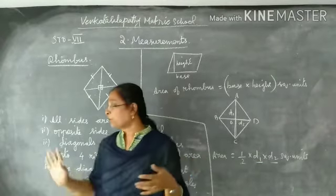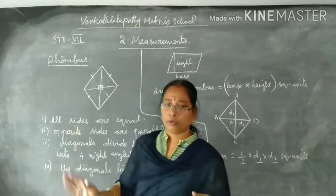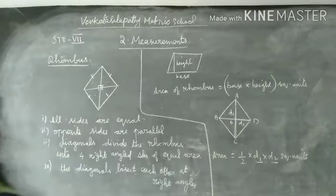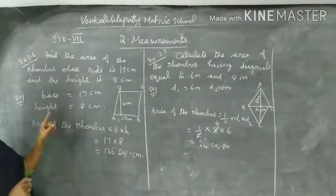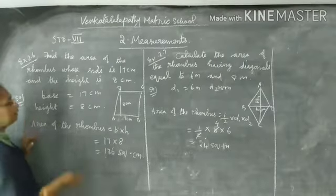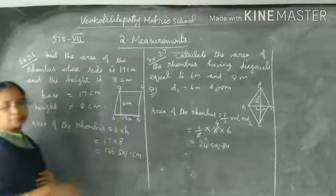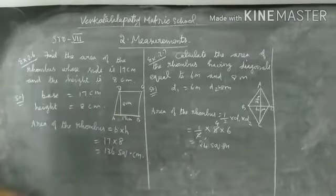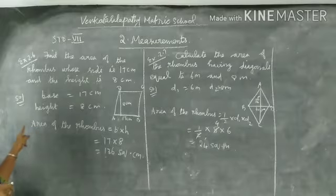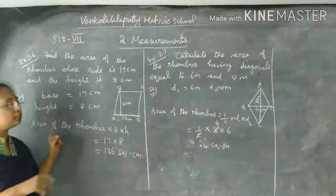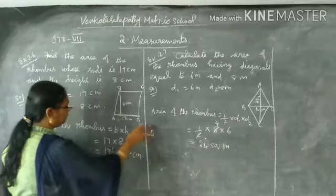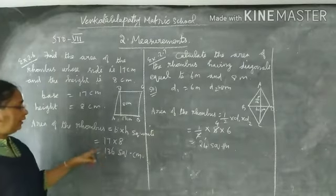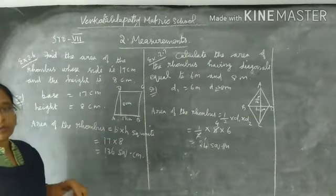This is the sum part. So here is the rhombus. Find the area of the rhombus. Side and height. Base and height of the rhombus. The area of the rhombus is equal to b into h square units. What is the base? 17. Height is 8. So the answer is 136 square centimeters.